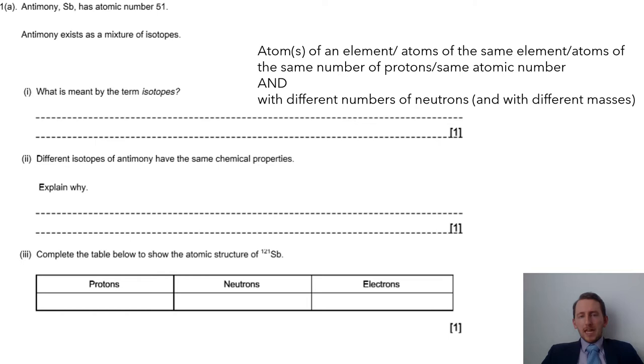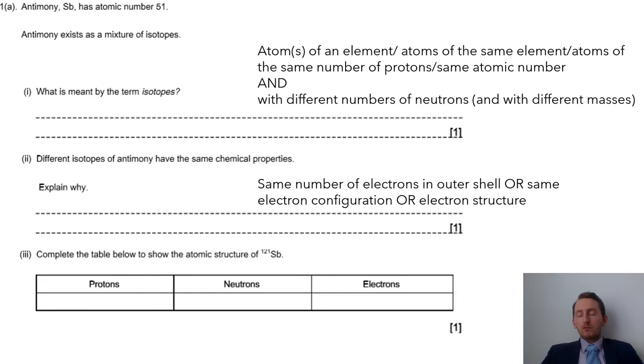We then are asked why different isotopes have the same chemical properties. Well, the reason why anything will have a particular chemical property comes from the number of electrons that they have. So different numbers of neutrons, but they've got the same protons and also therefore the same electrons.